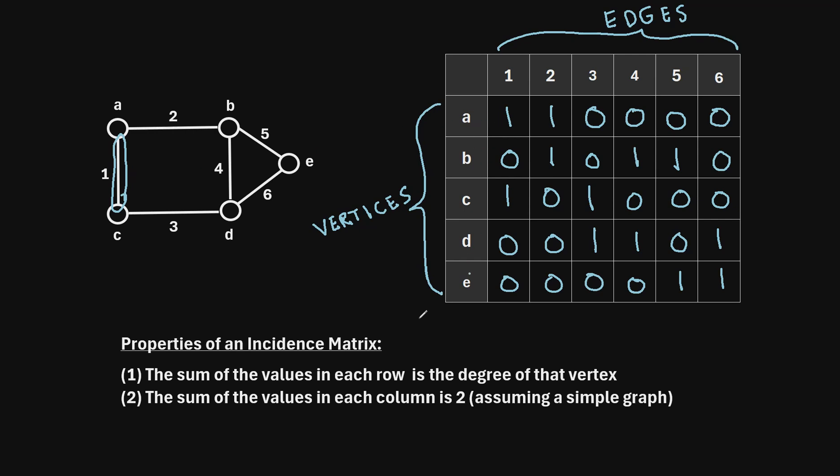In other words, it must be touching exactly 2 of these vertices within the matrix. And the same is true of every column. So every column just represents an edge. So the sum of the number of vertices that each edge is incident with must be 2.